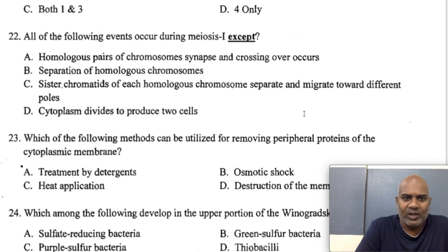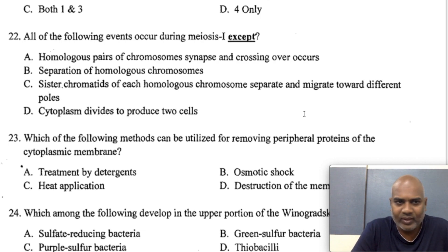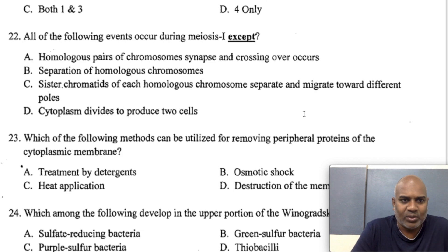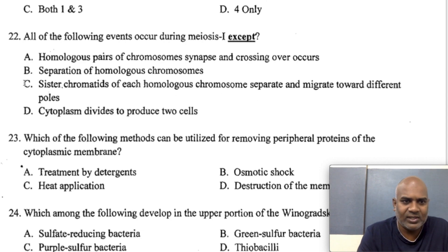All of the following events occur during meiosis I except: homologous pairs of chromosomes synapse and crossing over occurs; separation of homologous chromosomes occurs; sister chromosomes of each homologous chromosome separate and migrate towards different poles; cytoplasm divides to produce 2 cells. The answer is C — it is wrong because in meiosis I it is homologous chromosomes that separate, not sister chromatids.